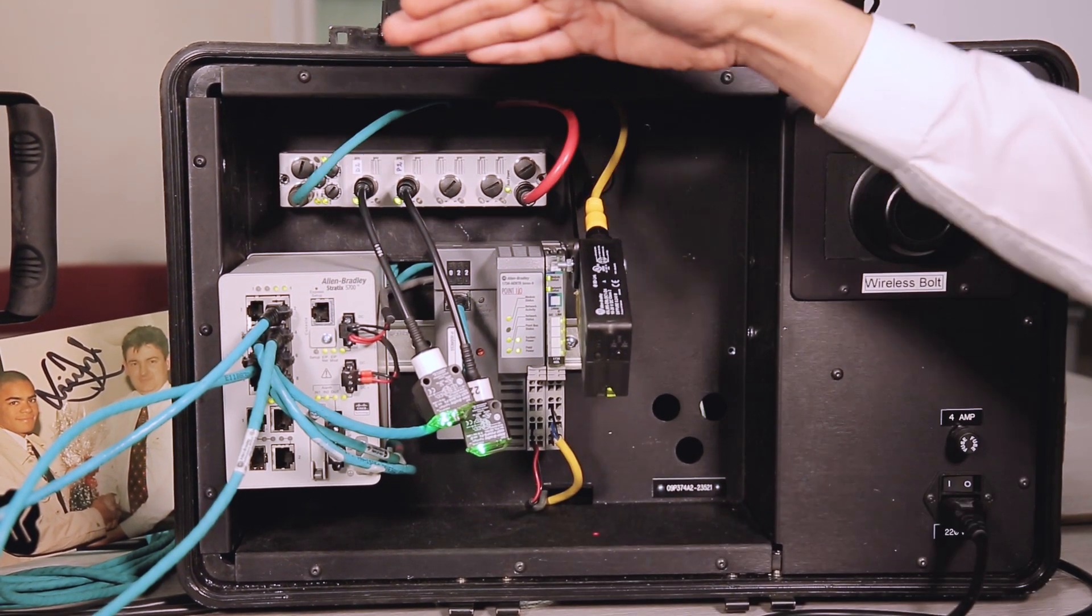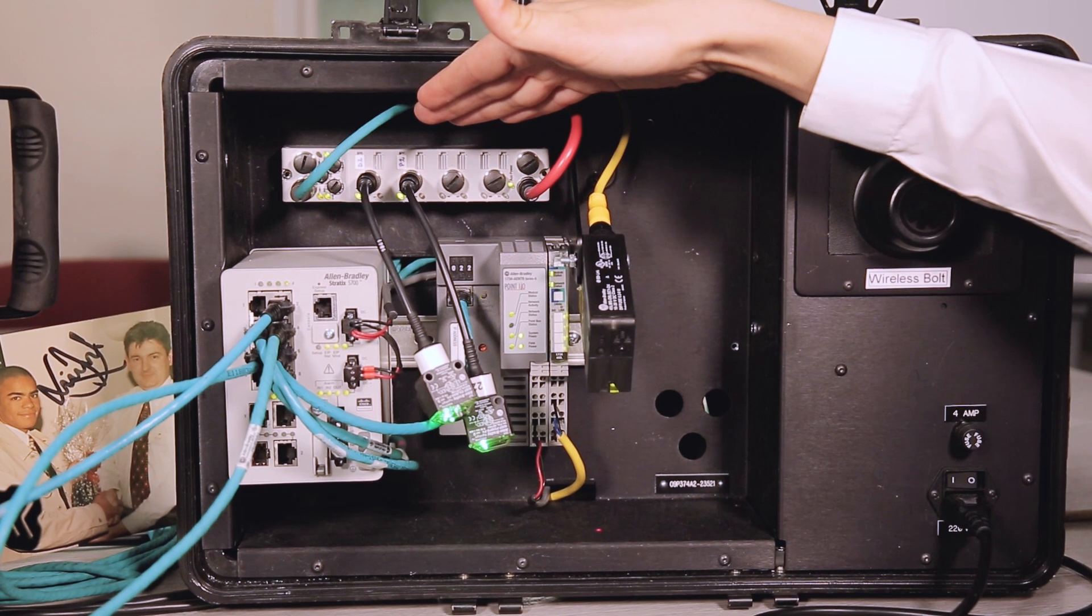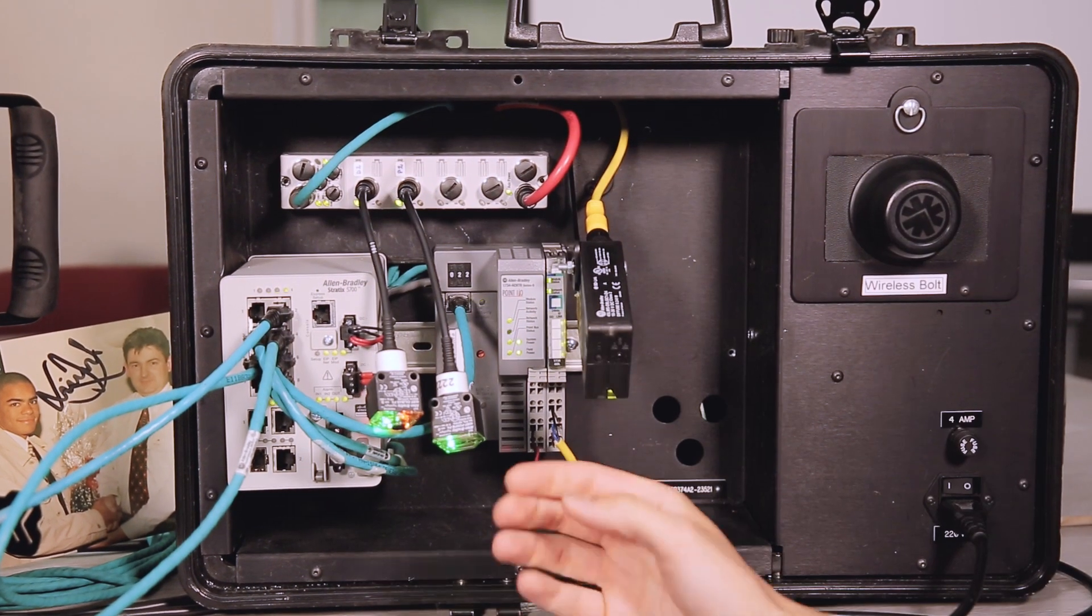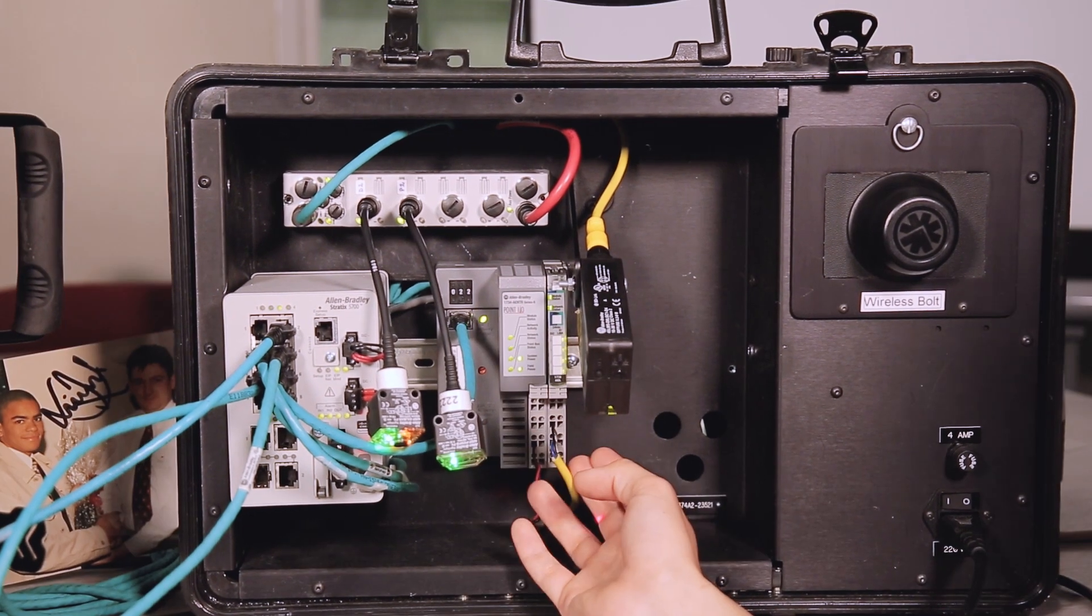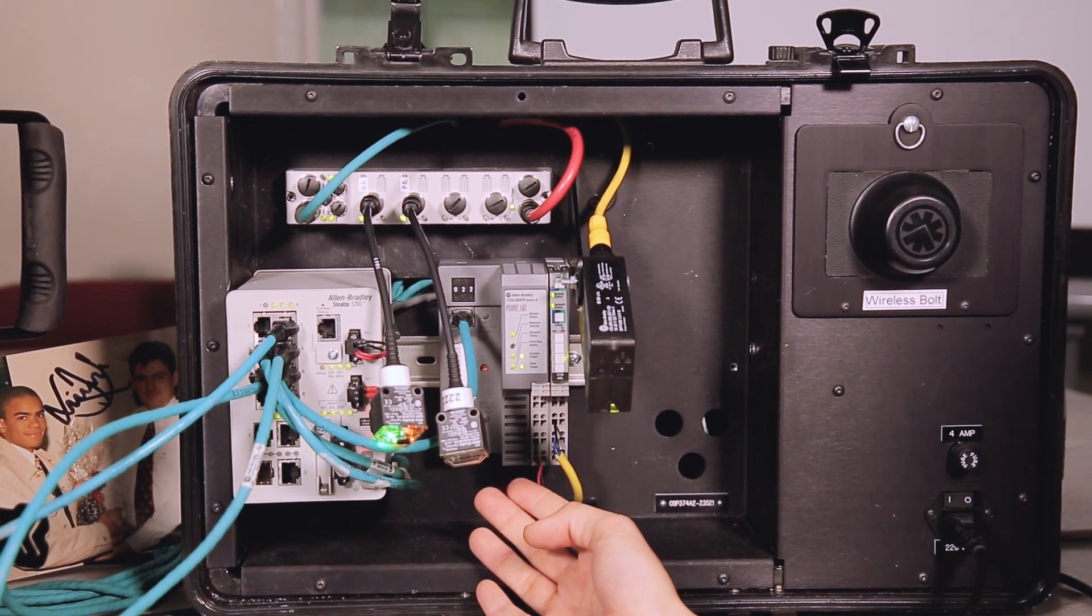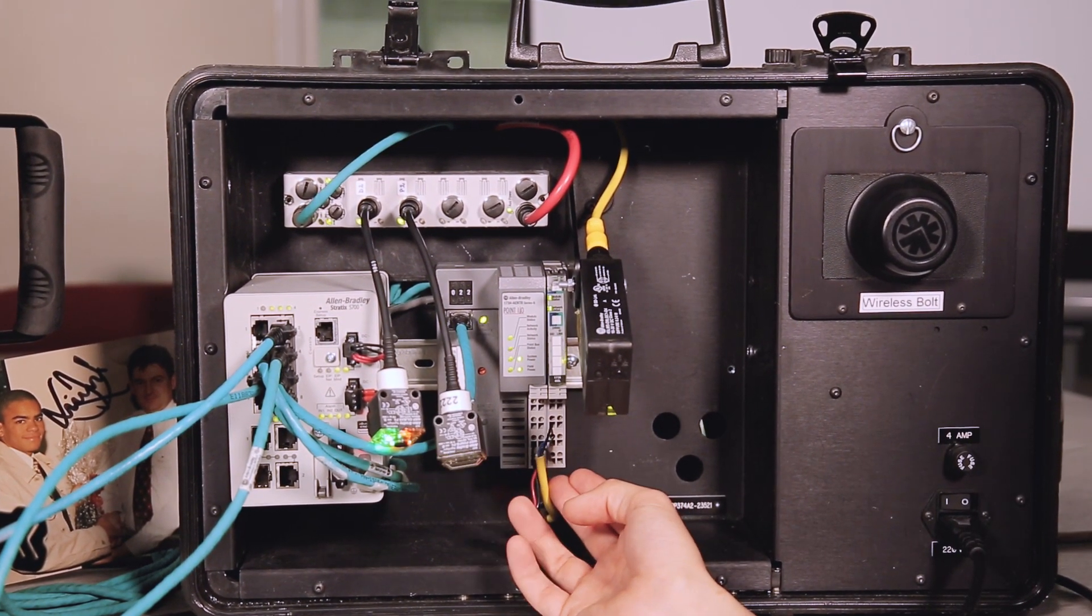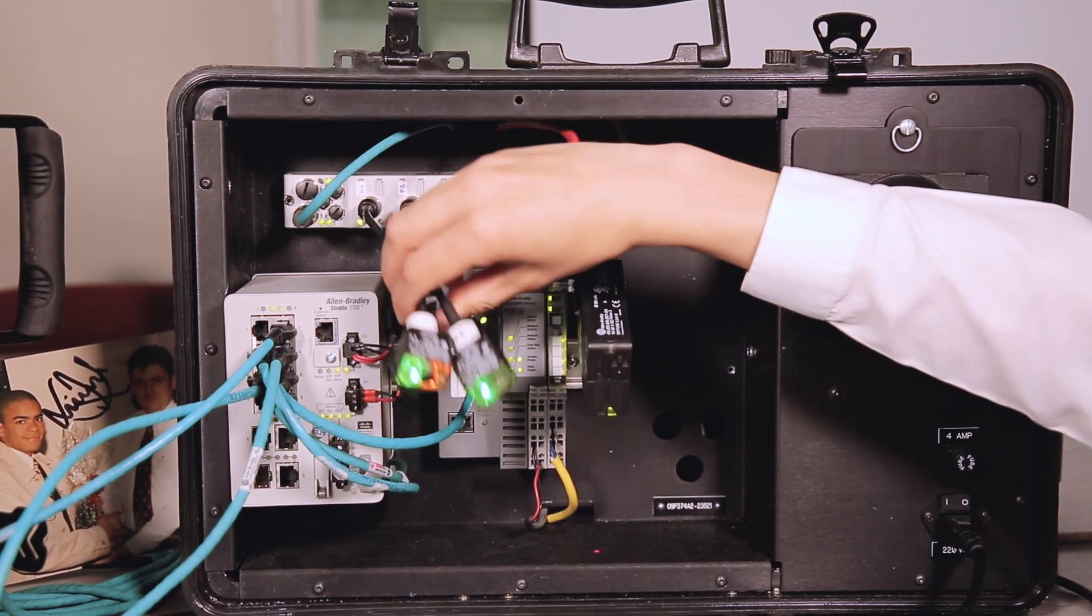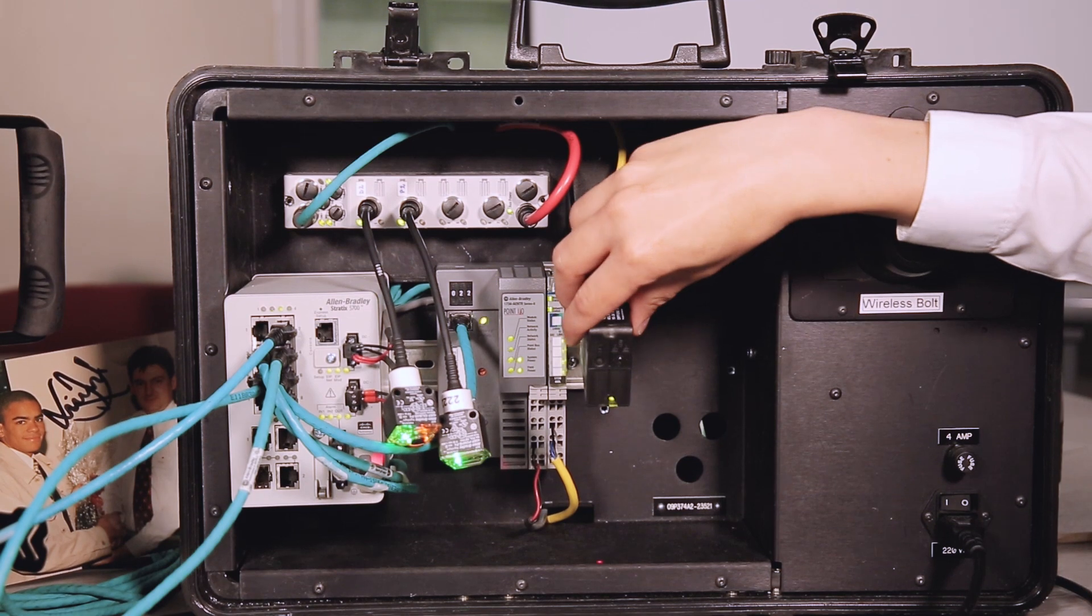The other things we have in here is an IO-Link master which we use for connecting our SenSmart sensors, which is an armor block. We also have our point IO adapter with another IO-Link header on there as well. We have a couple of photoelectric sensors and we have a small laser rangefinder.